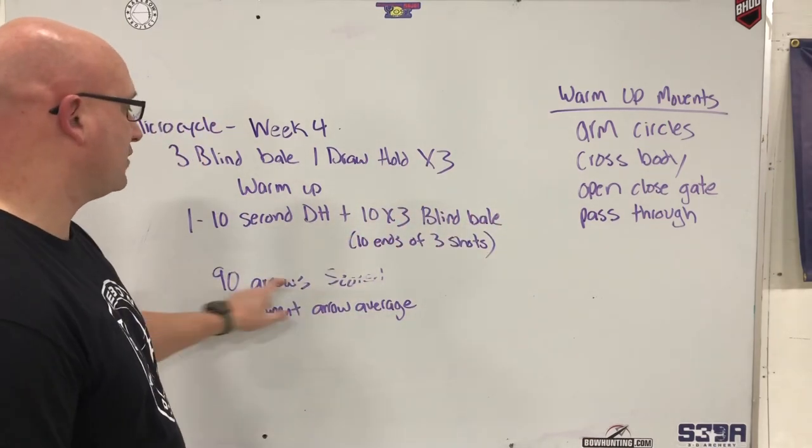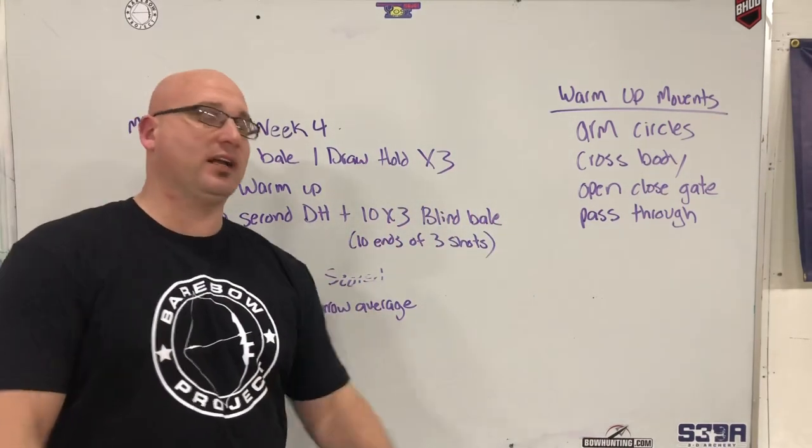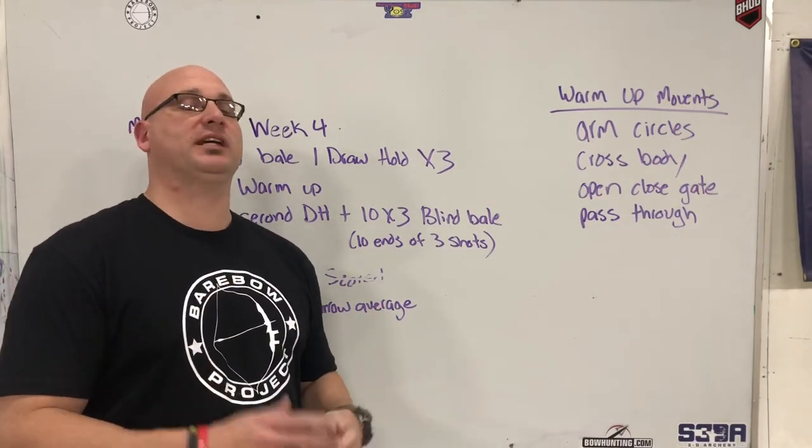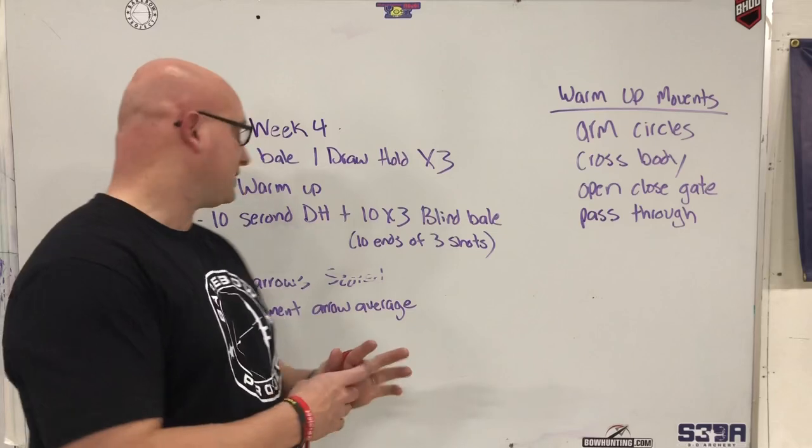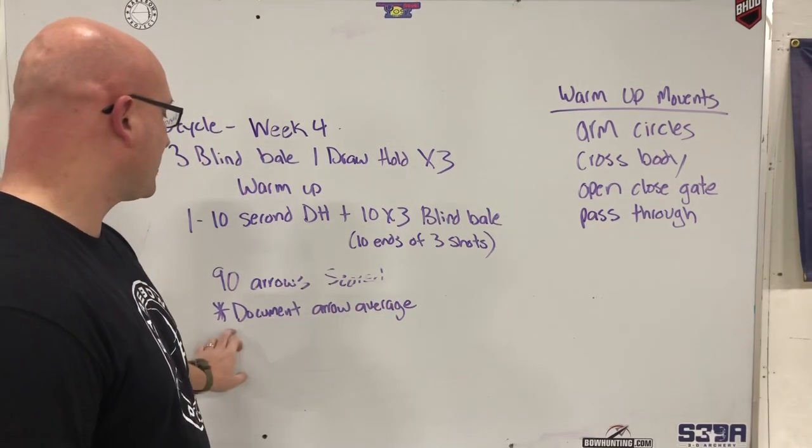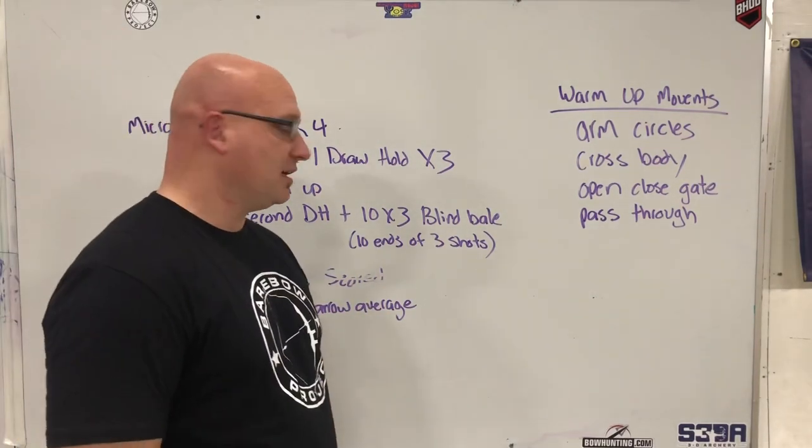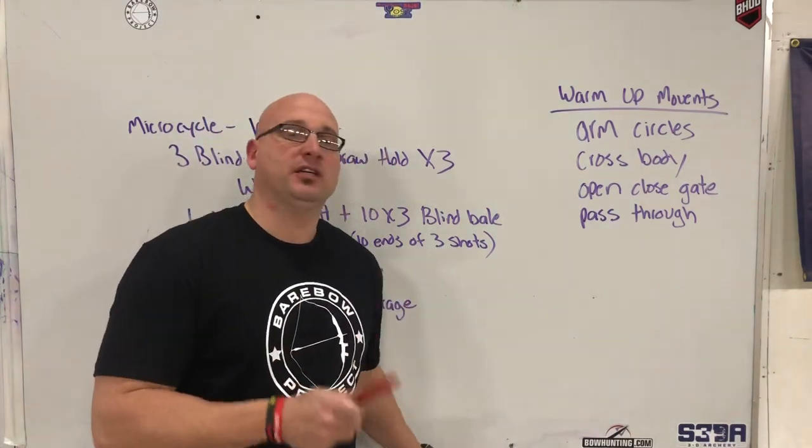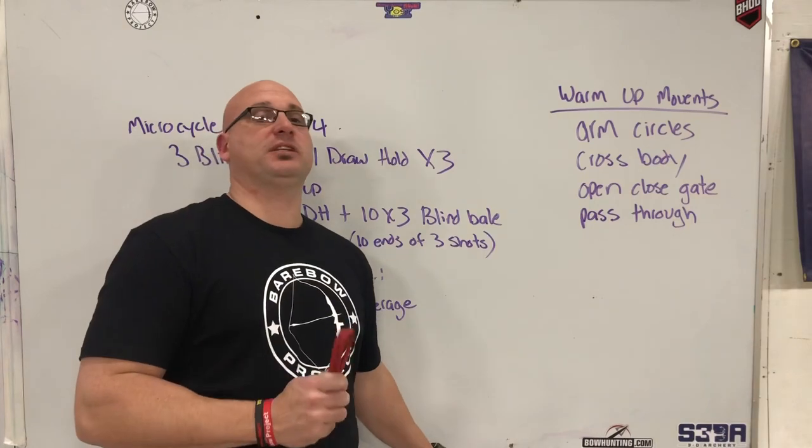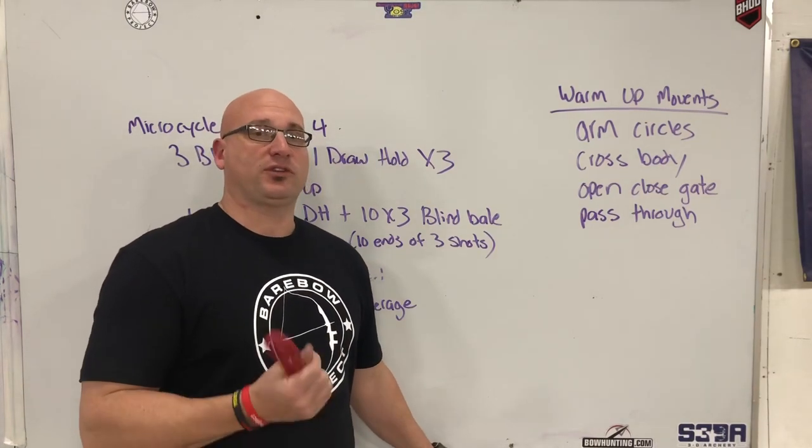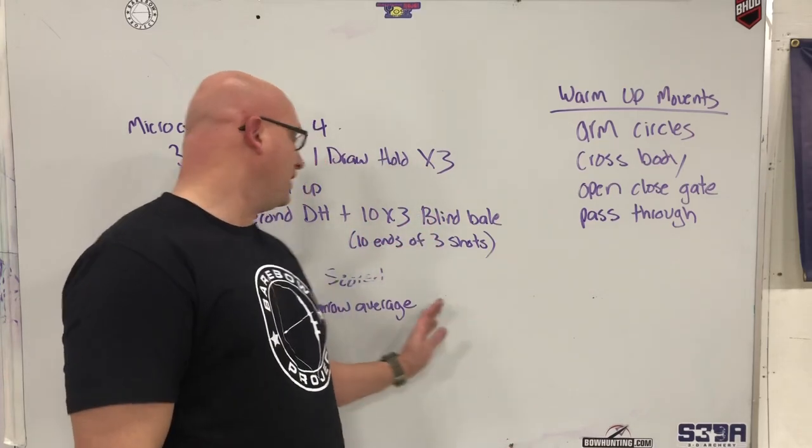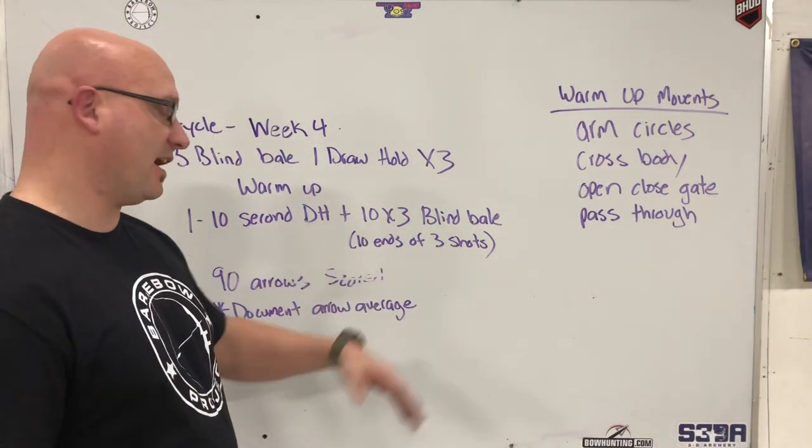So just week one, these numbers will fluctuate, the programming will change, and if you have questions like I said shoot me a message. But you're going to shoot 90 arrows scored and you're going to document your arrow average. What you'll see is every week on a Monday, you're going to document your arrow average and see which direction that goes. The goal obviously is to see a gradual incline in your arrow average. But what we're doing is you shoot those 90 arrows.